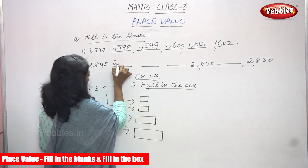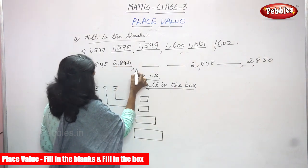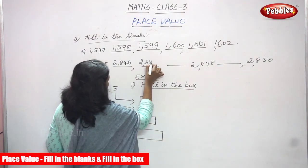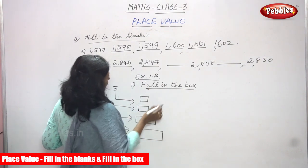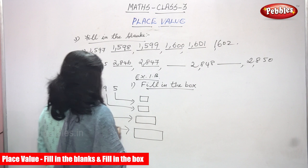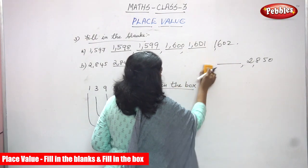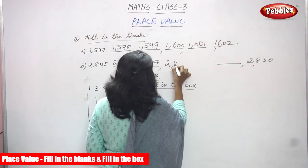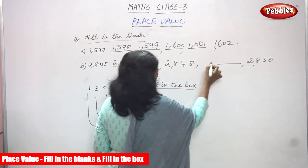2845. Now you're going to write 2846. This is also fill in the blanks. 2847 — next number is given clearly, already the number is given, so no need to worry. The number is here. So 2848. Next, what is the number?